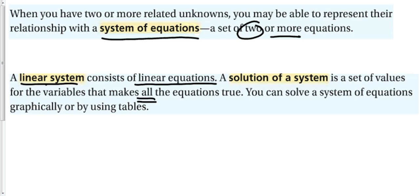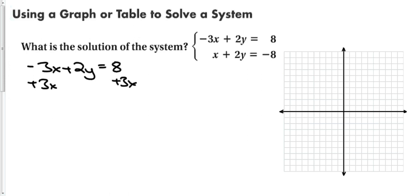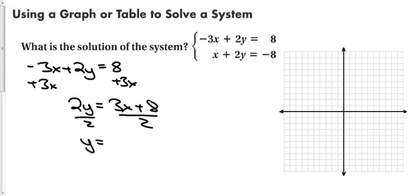In this section we can solve using a graph or a table, and we'll see how to solve algebraically in the next section. To graph the two lines, the best approach is slope-intercept form. Starting with the first equation: negative 3x plus 2y equals 8. Adding 3x to both sides gives 2y equals 3x plus 8, then dividing by 2 gives y equals three-halves x plus 4.